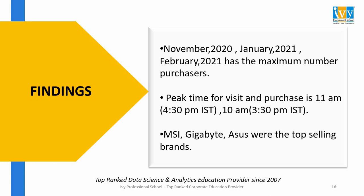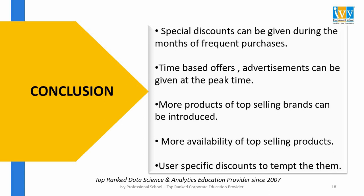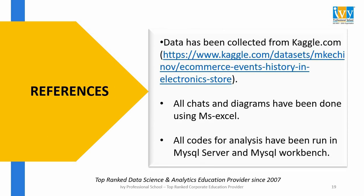Based on these findings, some conclusions were made to help the business run more successfully. Special discounts should be given during months of frequent purchases. Time-based offers and advertisements should be placed at peak visiting hours. More products of top-selling brands should be introduced, and availability of top-selling products should be ensured. User-specific discounts for users purchasing very infrequently should be offered to tempt them to purchase again.